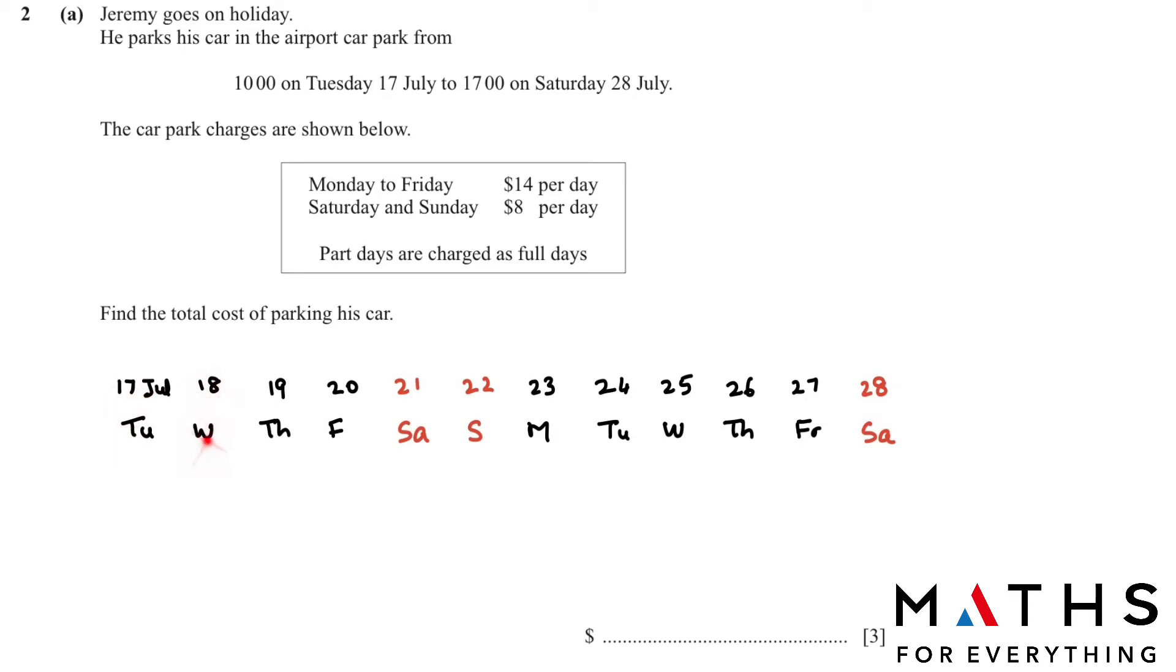So 17 July is Tuesday, 18 July is Wednesday, 19 July is Thursday, and the red ones are our Saturday Sunday. So on Monday to Friday, the cost is 14 dollars per day. So how many black do we have? 1, 2, 3, 4, 5, 6, 7, 8, 9. 9 times 14 is 126. And the red we have are 3. 3 times 8. The cost on Saturday and Sunday is 8 dollars. That's why we multiply by 8. We add it. We get 150 dollars. So I hope this is clear.